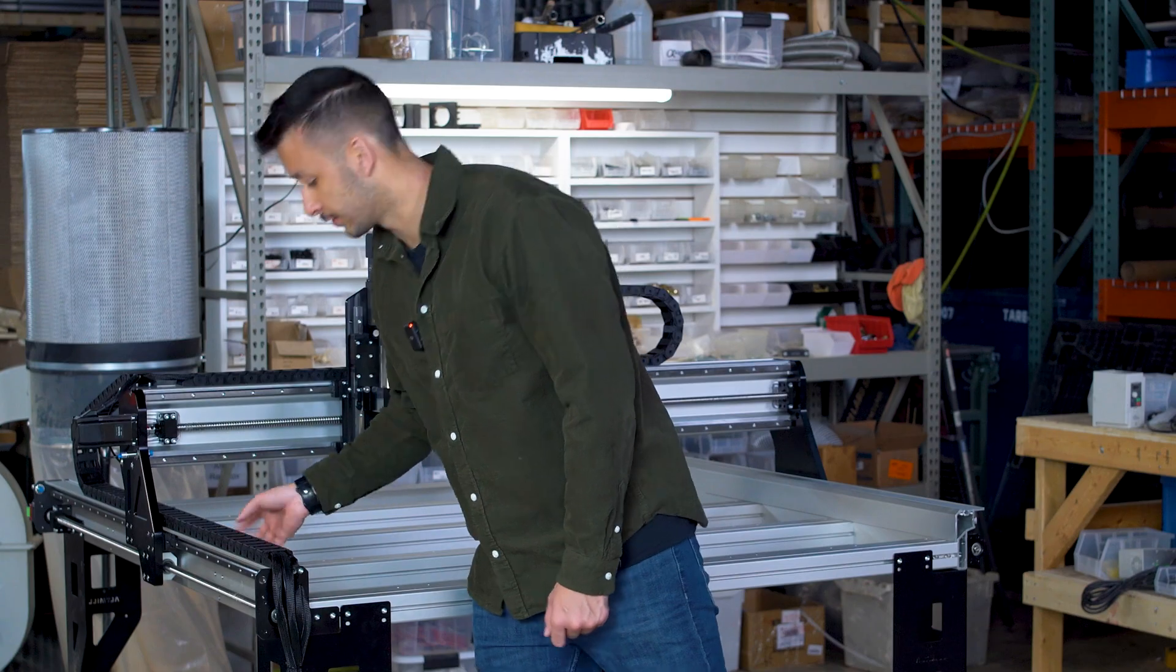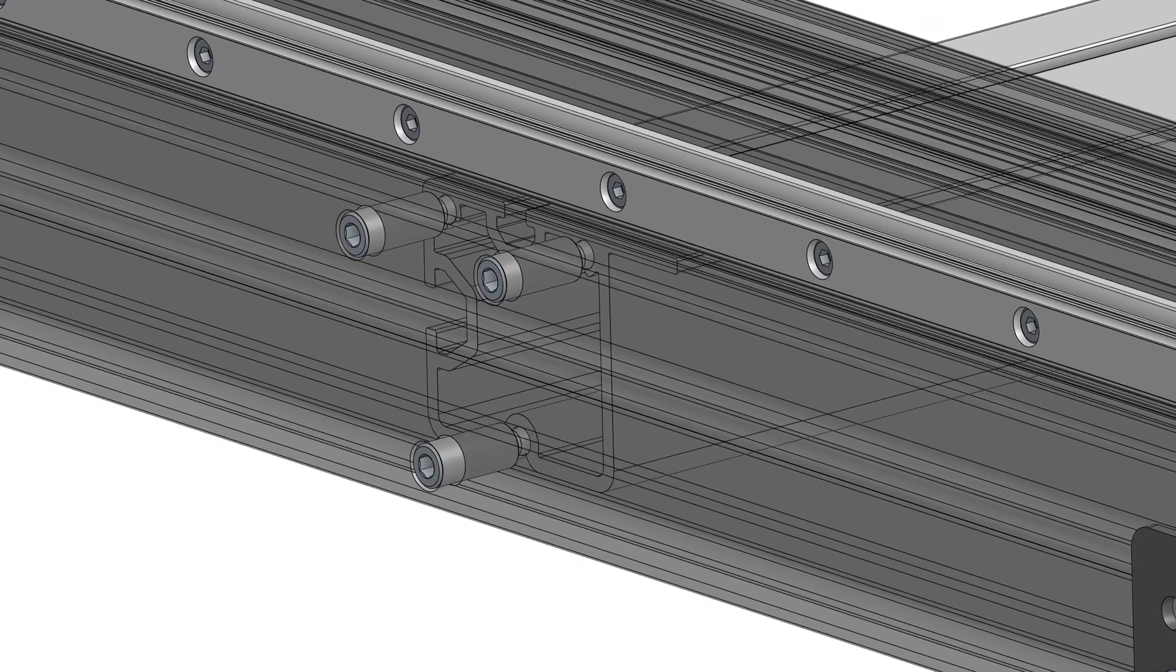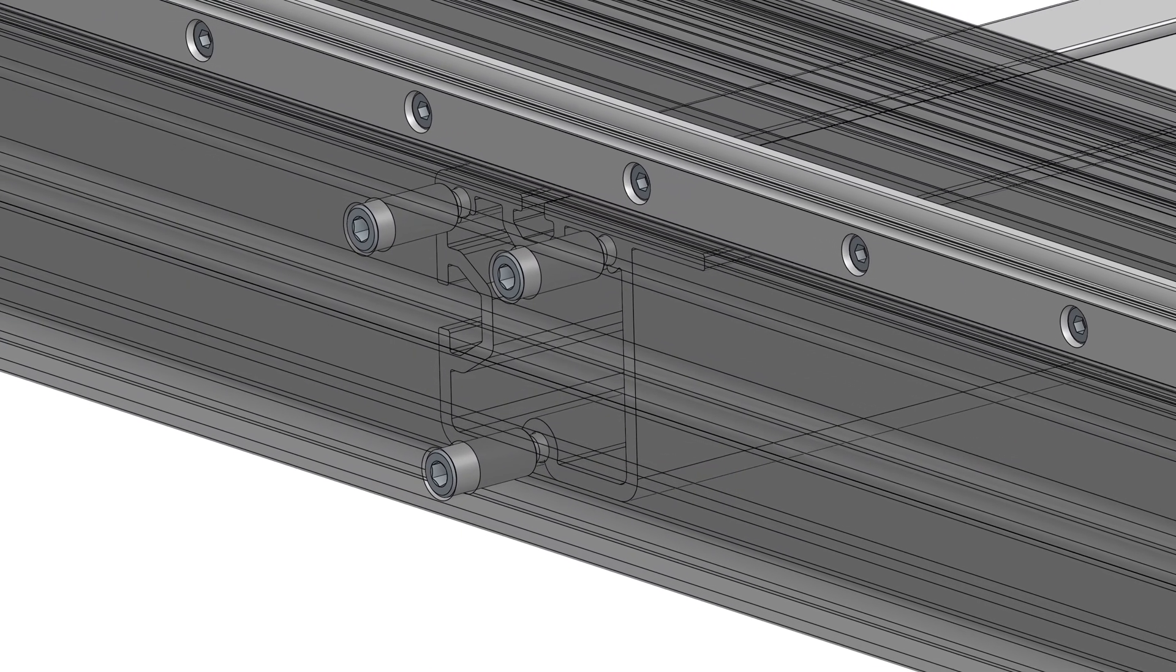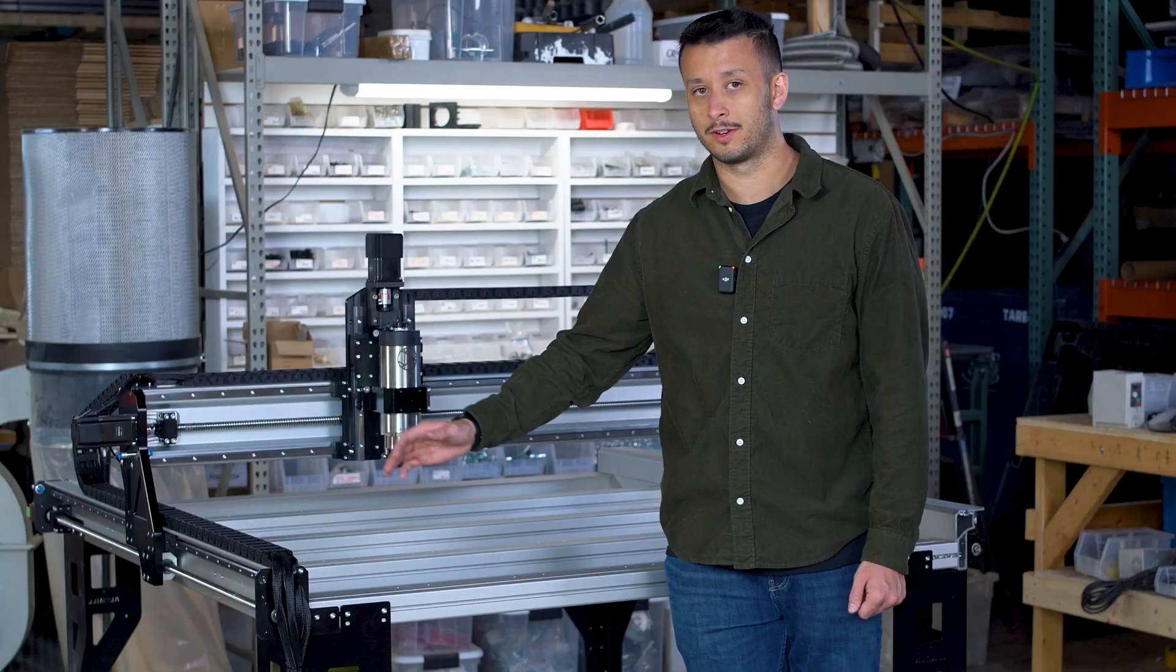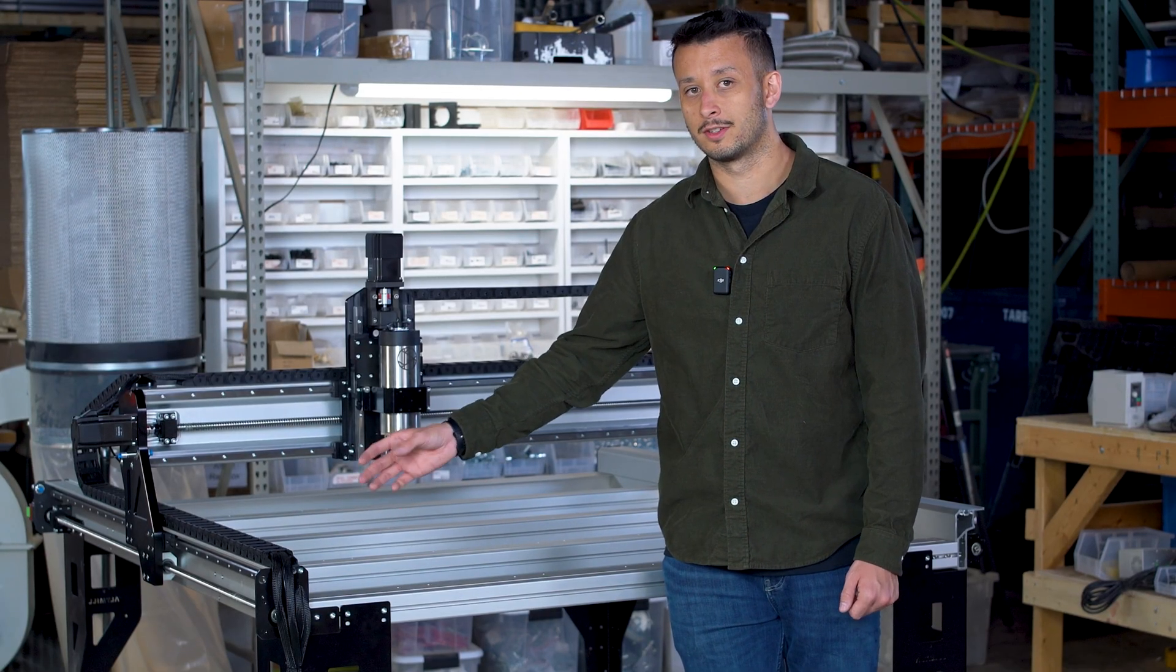On the new Y axis rail extrusions we're also going to be implementing a new cross beam screw type so this is now a customized screw that has a really tall head and it'll basically prevent you from potentially dropping the screw into the extrusion.